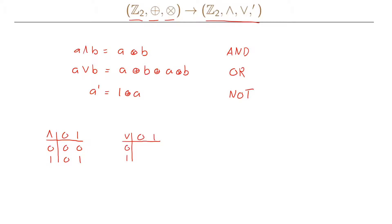For the OR operation, computed as A plus B plus AB modulo 2: 0 OR 0 is 0; 0 OR 1 is 0 plus 1 plus 0 equals 1; 1 OR 0 is 1; and 1 OR 1 is 1 plus 1 plus 1 equals 3, which is 1 modulo 2. For the NOT operation, A prime equals 1 plus A modulo 2: NOT 0 gives 1 plus 0 equals 1, and NOT 1 gives 1 plus 1 equals 0 modulo 2.